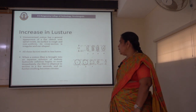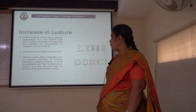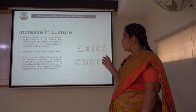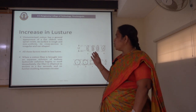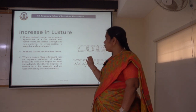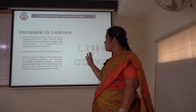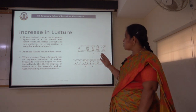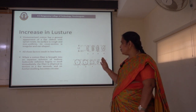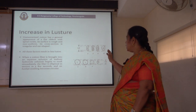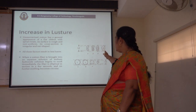Coming first to the increase in luster: unmercerized cotton has a general appearance of a flat ribbon with a spiral twist; its surface is rough and non-uniform and its cross-section is irregular and ear-shaped. This is what we observed in the previous diagram of unmercerized cotton in the longitudinal view and cross-sectional view. All these factors result in less luster. After mercerization, when a cotton fiber is brought into an aqueous solution of sodium hydroxide, cellulose begins to swell immediately and the fiber becomes elliptical in section, and on further swelling becomes circular.